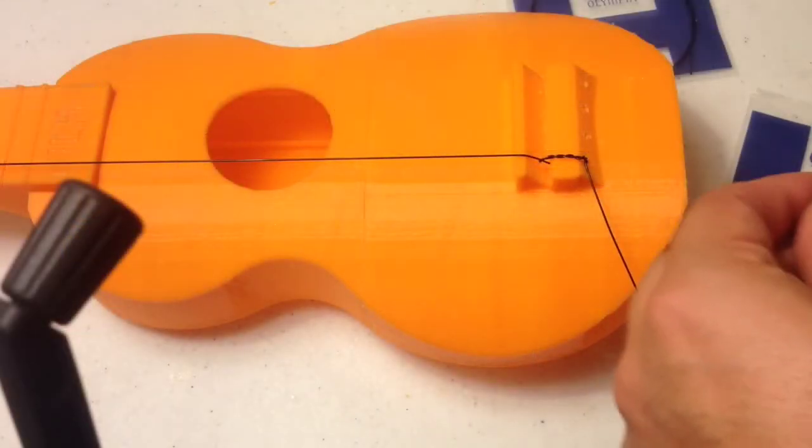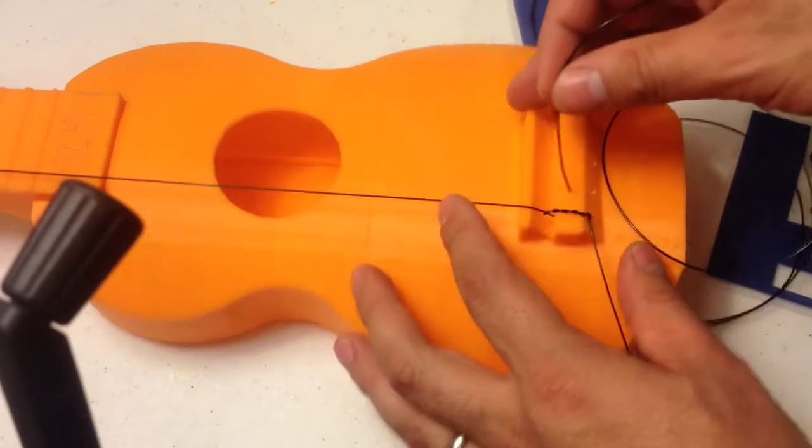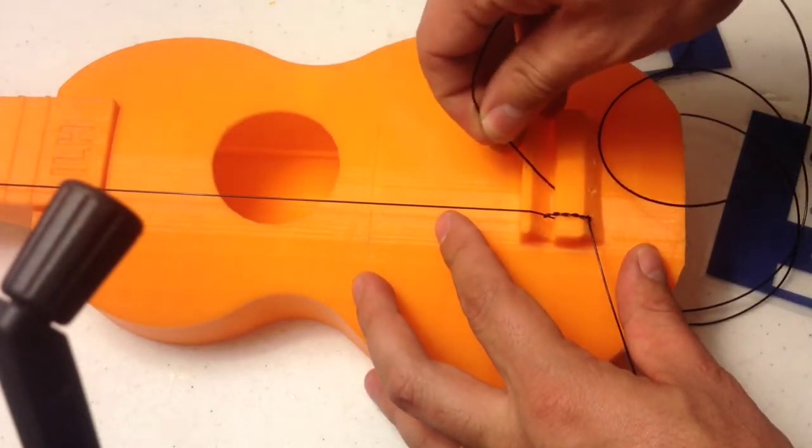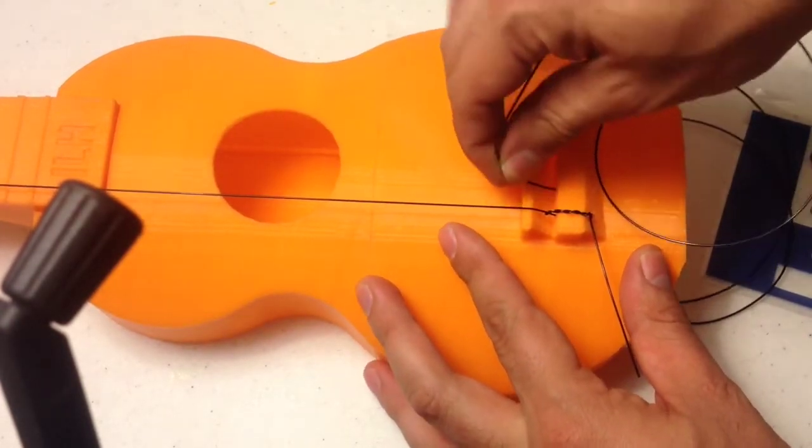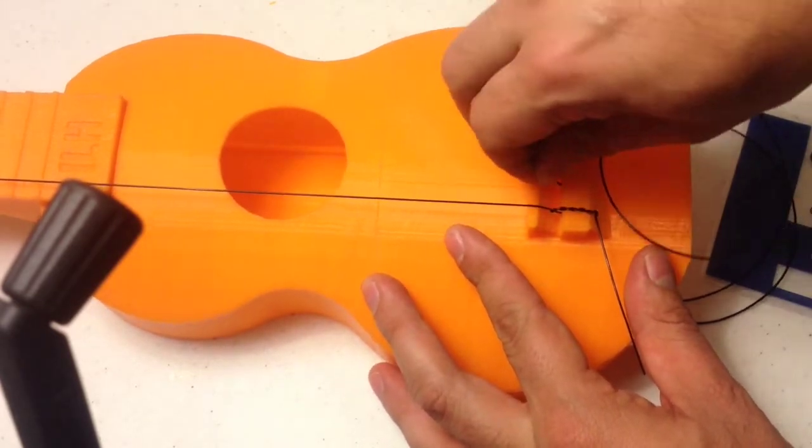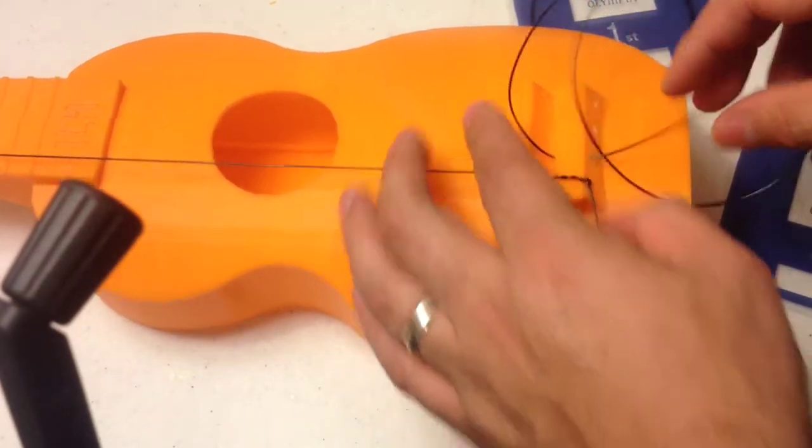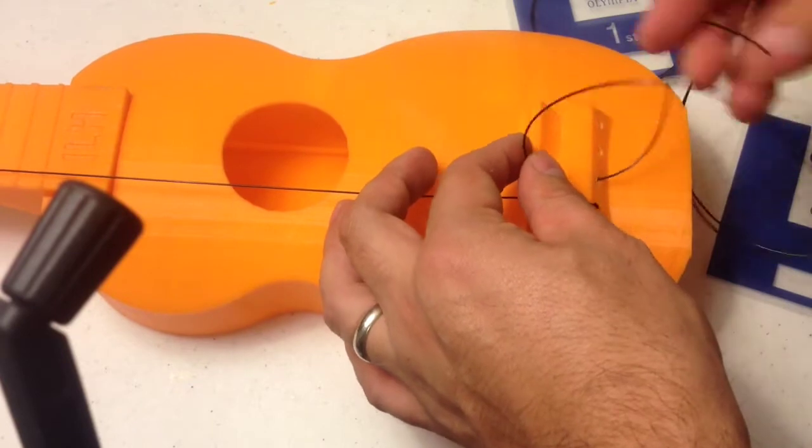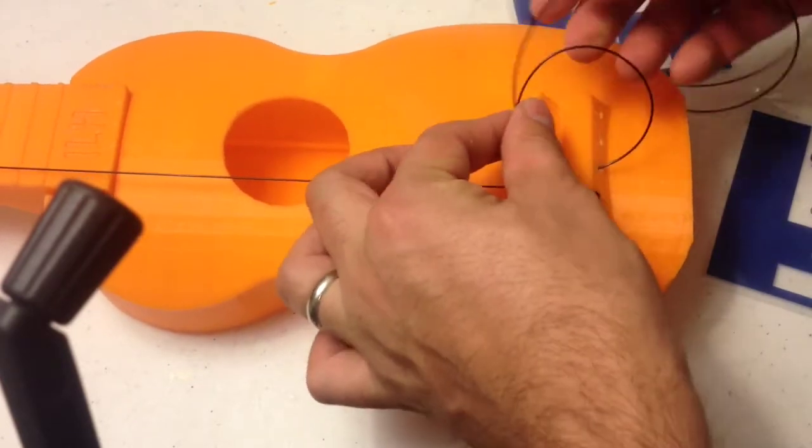Alright, the first string is now strung. Just zoom in here so you can see exactly how I string it. So you start off from this side and you string it through, and after pulling it through, again just like you're doing a regular knot...